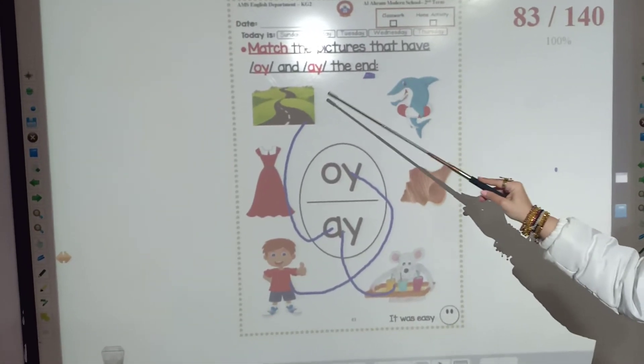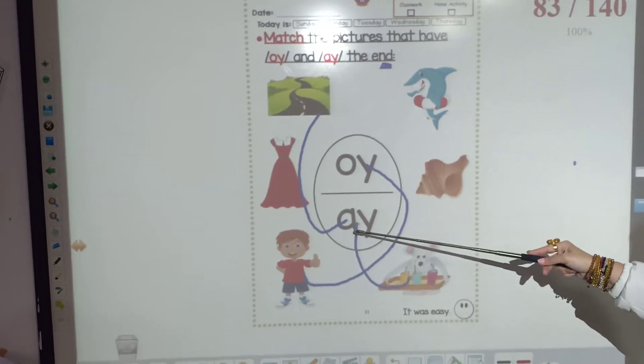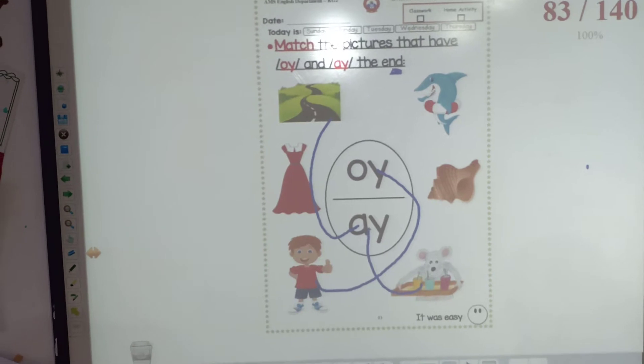So, in this page, we are going to match way and tray with alternative ay and boy with alternative oy.